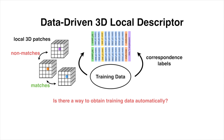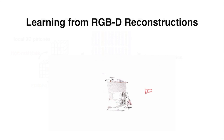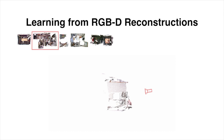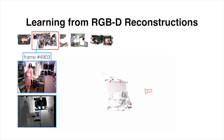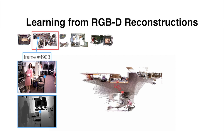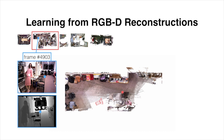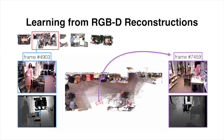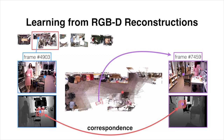Our answer is yes, and to this end, we propose to leverage existing RGBD reconstructions found online, which serve as ground truth correspondence generators. Suppose we pick a random surface point of a depth scan from a completed reconstruction — in this case, a corner of a chair. On the right, we see the top-down view of the scan. Estimated camera poses from the reconstructions allow us to find other RGBD frames that view the same corner of the chair from other scanning angles. In this way, we obtain a correspondence label between two different views of the same 3D point. RGBD reconstructions contain millions of these instances, and by extracting the local volumetric patches around these interest points, we will have obtained precisely the kind of training data that we need for 3DMatch.